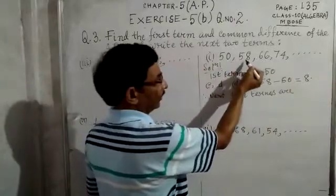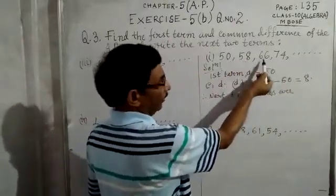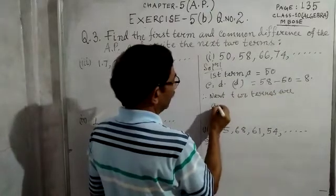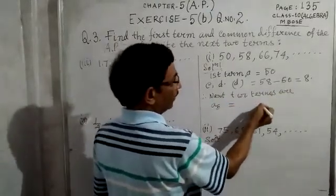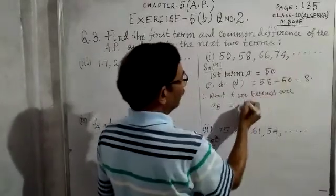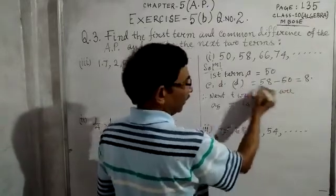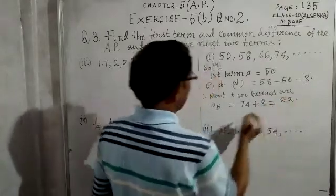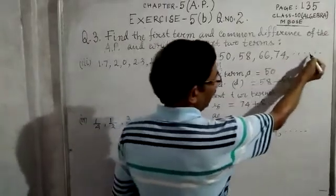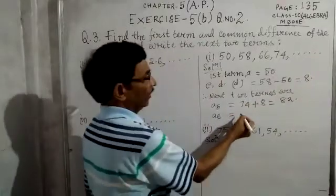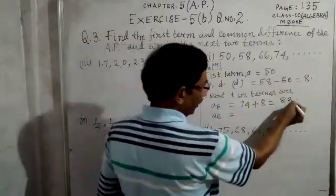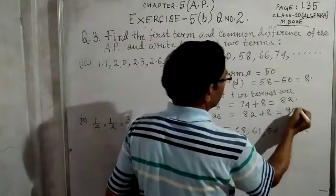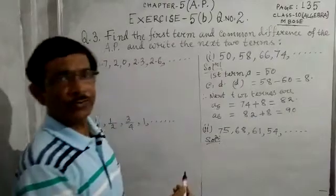We have A1, A2, A3, A4 and we need to find A5 and A6. A5 equals A4 plus D, so 74 plus 8 equals 82. Then A6 equals A5 plus D, so 82 plus 8 equals 90. These are the next two terms.